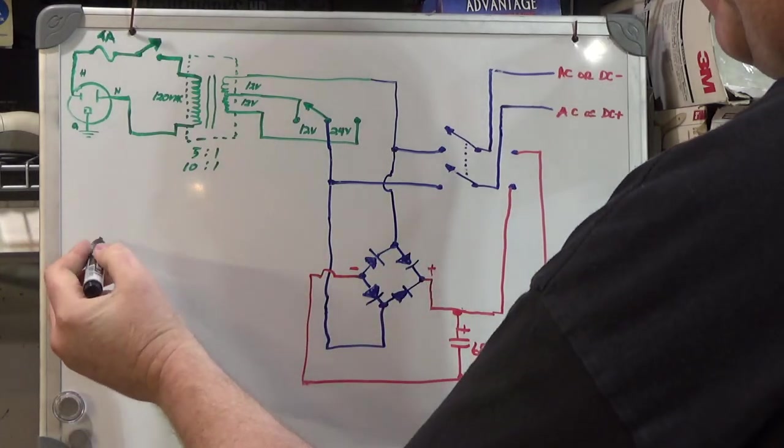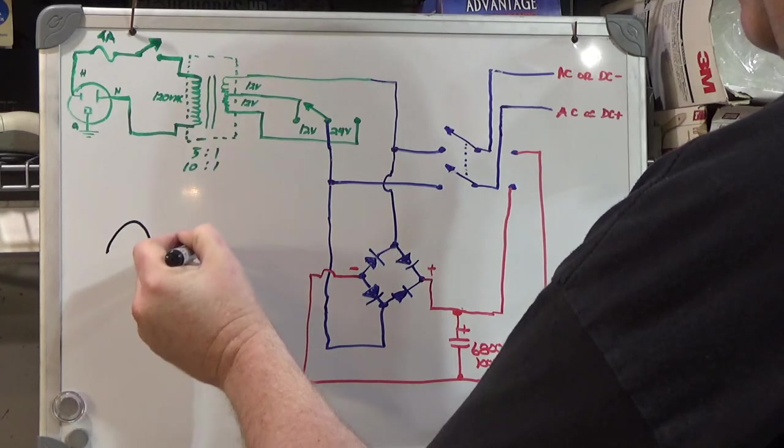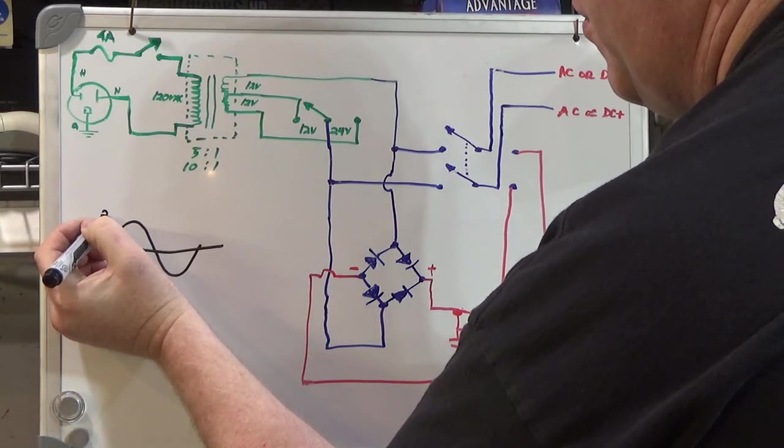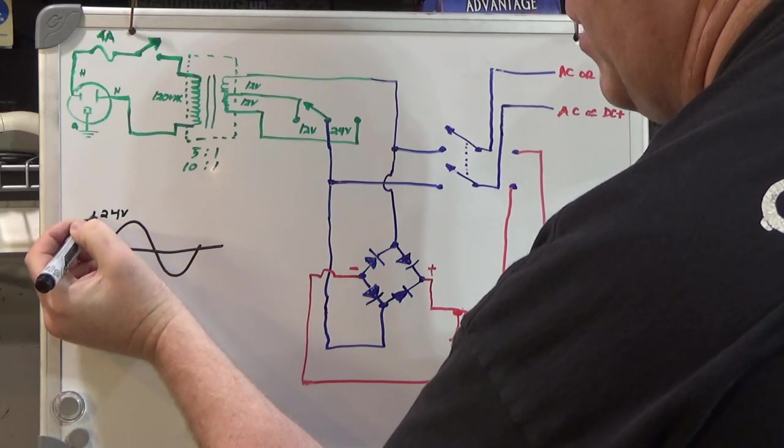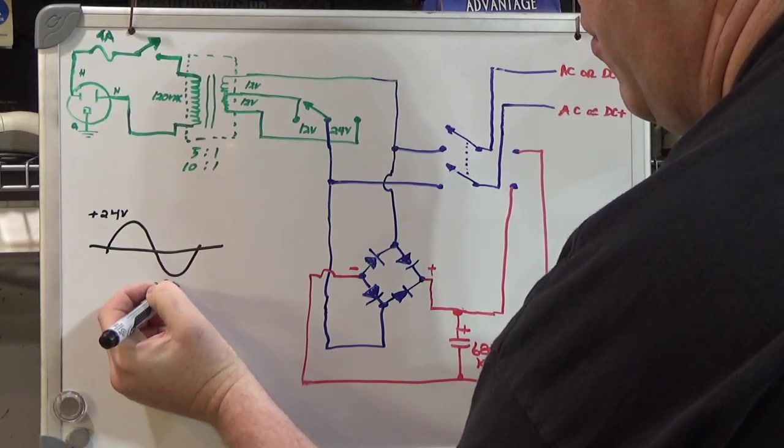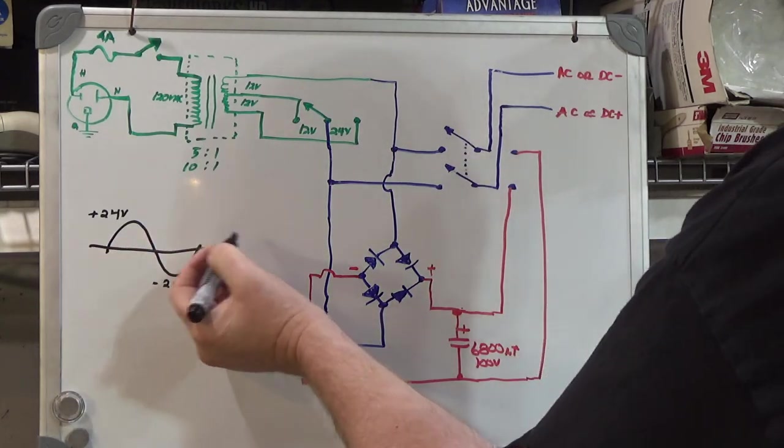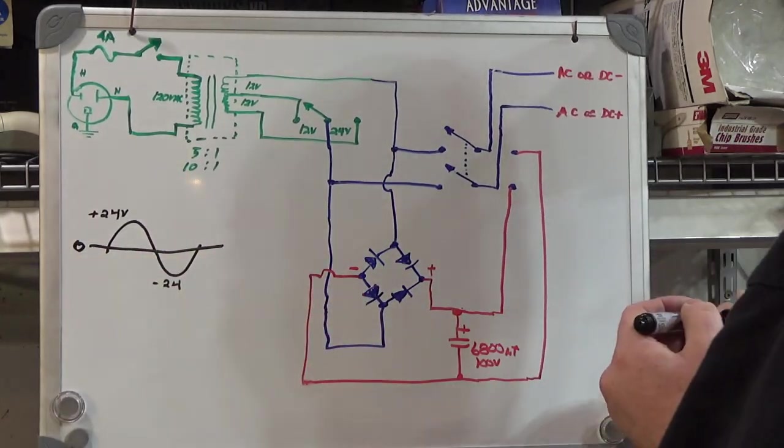AC is a symmetrical signal. Our output AC here is either 12 or 24 volts. Let's go with 24 volts. So this is plus 24 volts, minus 24 volts, and the center here is zero as a reference.